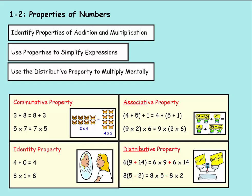We're on Lesson 2 of Chapter 1, which is Properties of Numbers. First, we're going to identify properties of addition and multiplication. Then we're going to use properties to simplify expressions. Then we're going to use the distributive property to multiply mentally.